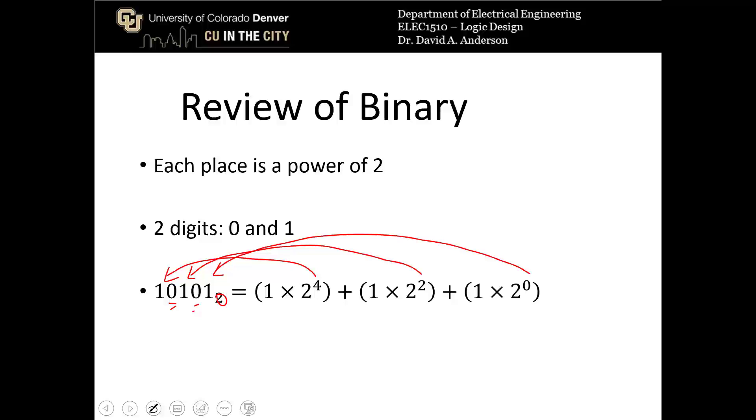So each one of those is a power of 2, whenever it's a 1 you have 1 times 2 to that power, whenever it's a 0 you have 0 times 2 to that power. So that's going to equal 16 plus 4 plus 1, which is 21 base 10. So 10101 base 2 is equivalent to the number 21 in decimal.